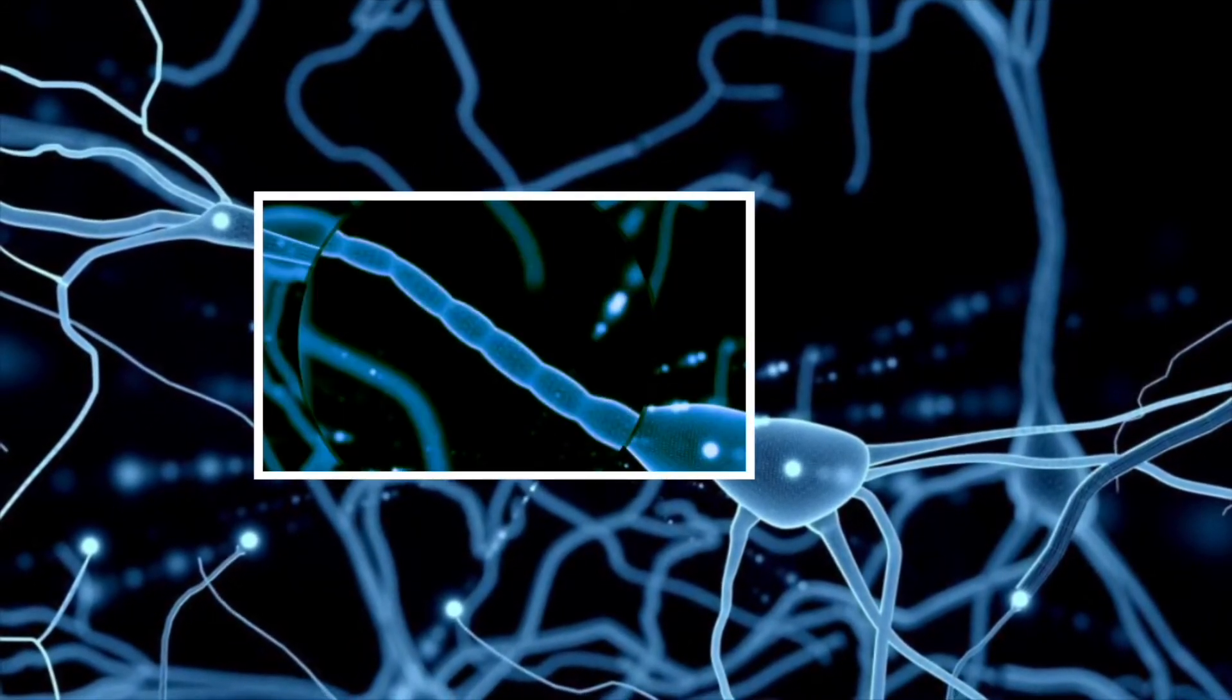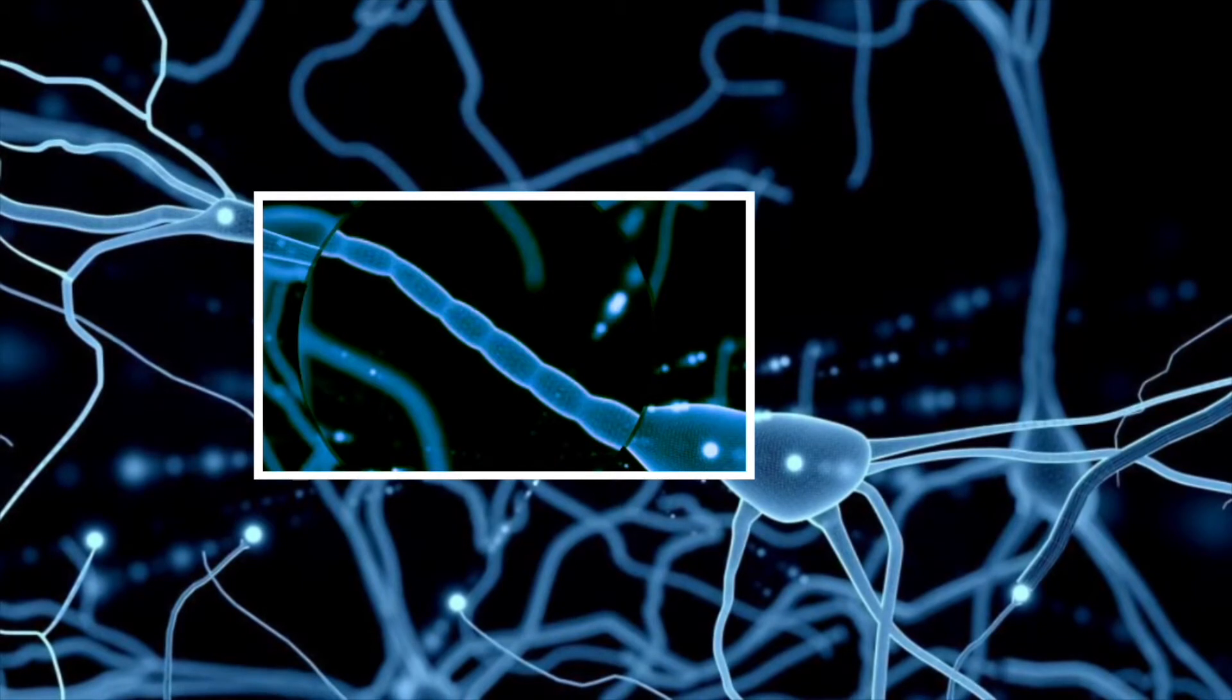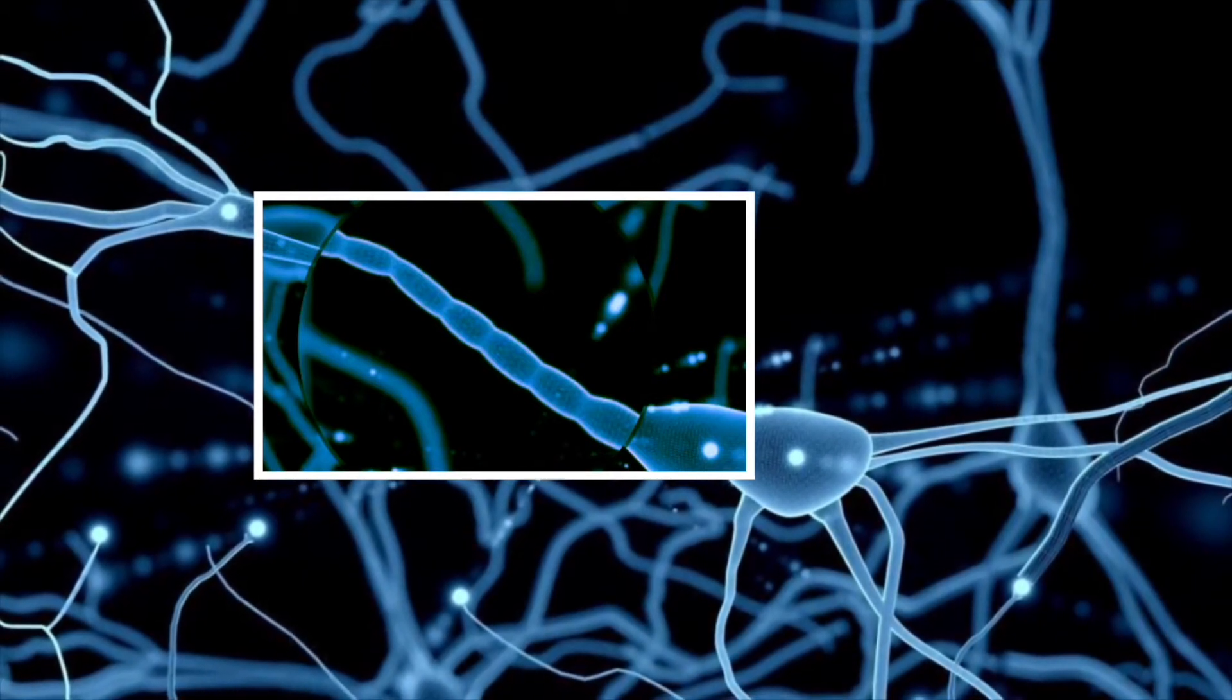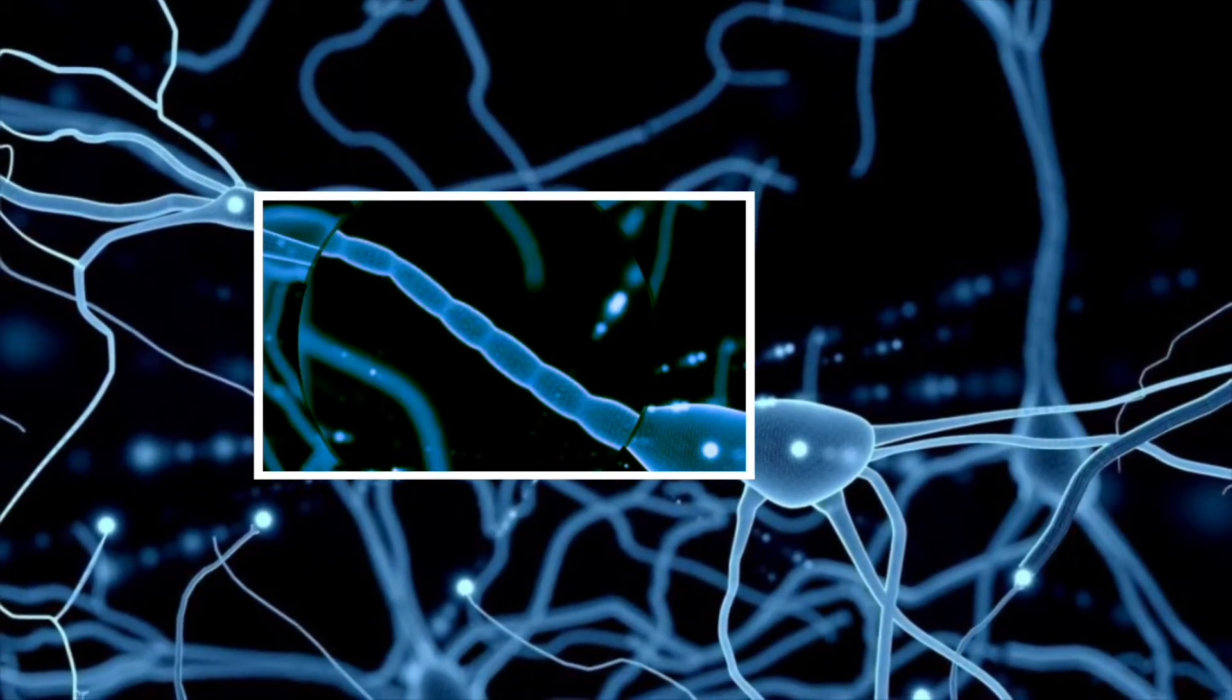Axons are insulated in order to allow the signal to travel faster and farther. This insulation is known as the myelin sheath.